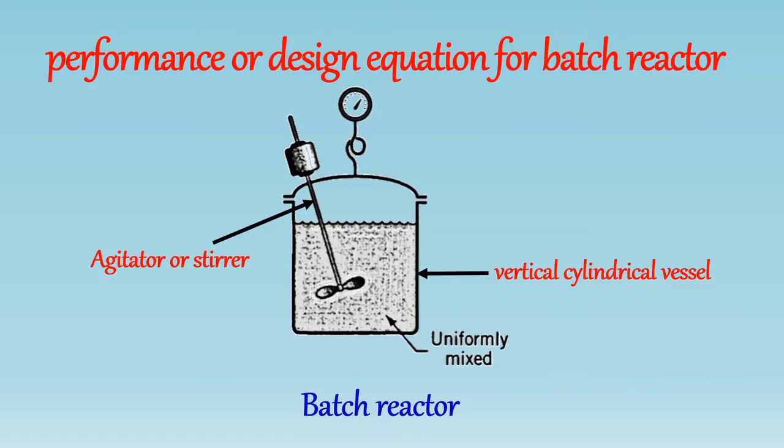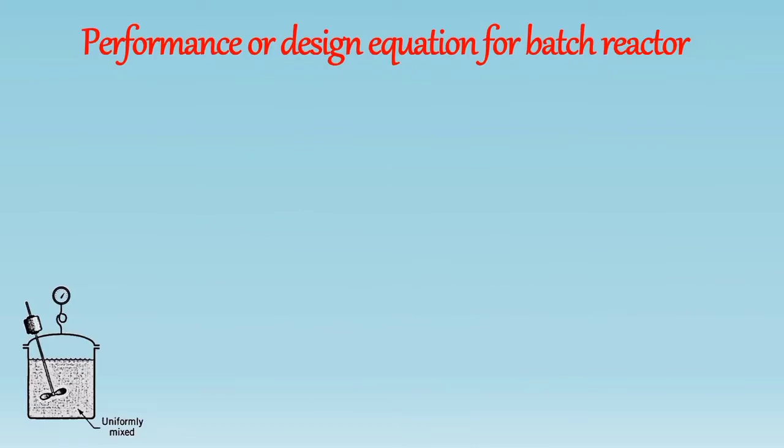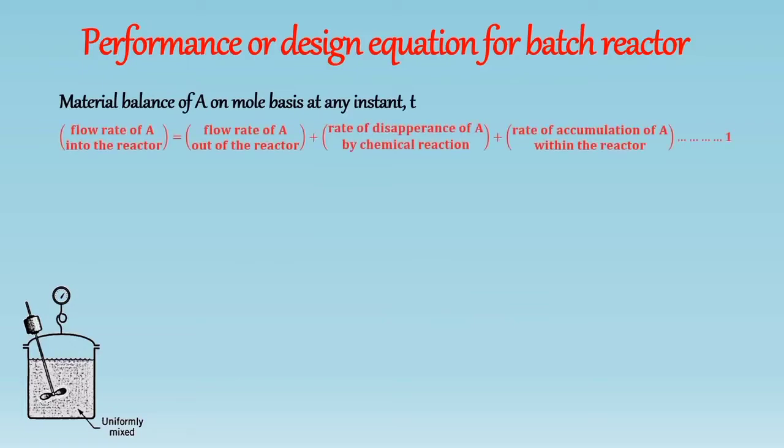Now let's see how to derive the performance equation for batch reactor. So let's take a material balance of reactant A on a mole basis at any instant of time T. So we get flow rate of A into the reactor is equal to the flow rate of A out of the reactor plus rate of disappearance of A by chemical reaction plus rate of accumulation of A within the reactor, equation number 1.